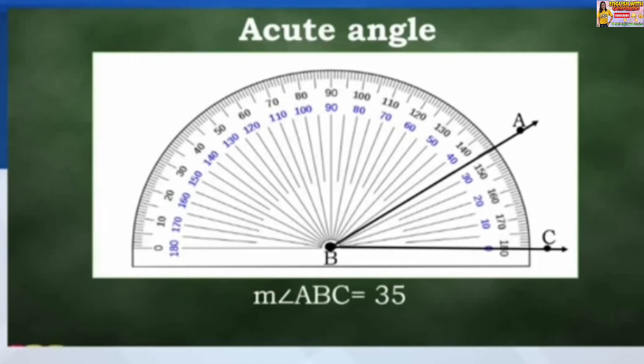Example: Measure of angle ABC is equal to 35 degrees. This angle is written mathematically in three ways: We have angle B, angle ABC, or angle CBA.